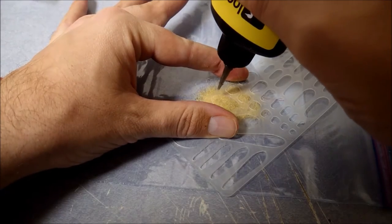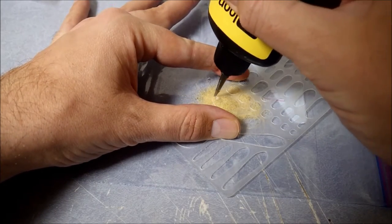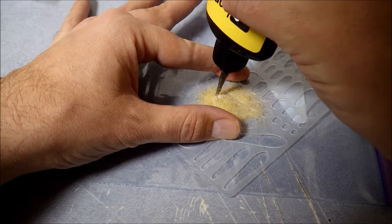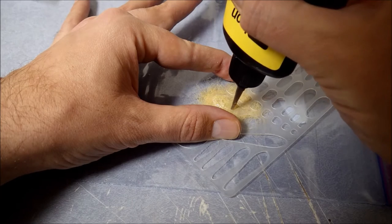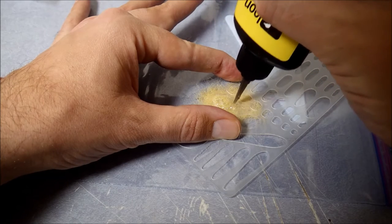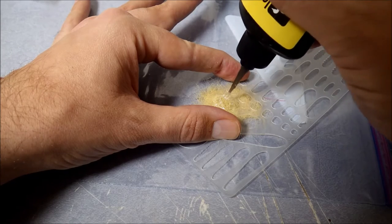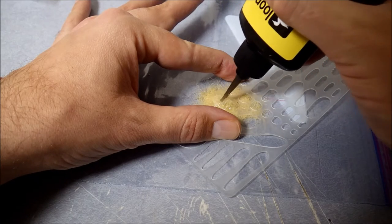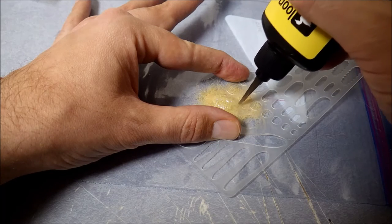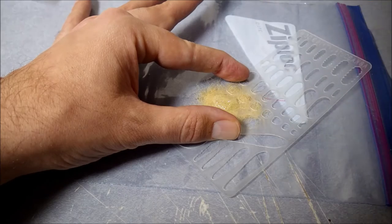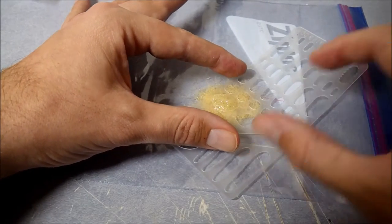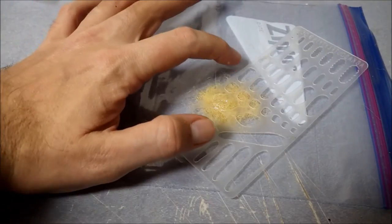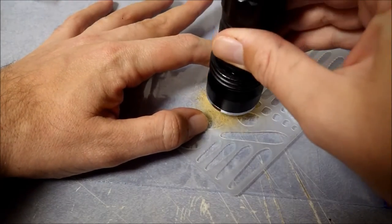And then just gently fill the space. It's quite easy. Then just let it sit for a minute. You can take the pressure off. I just like to give it a couple of seconds to let the resin sink into the fiber a bit. And then we'll set it up.